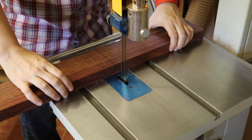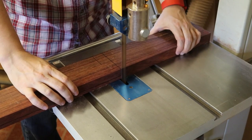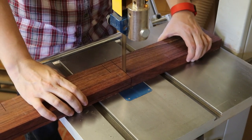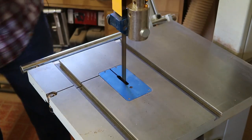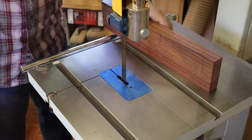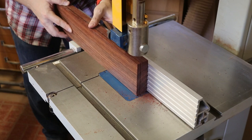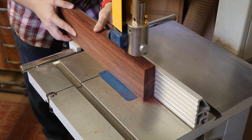Over at the band saw, I cut my piece of East Indian Rosewood to length. I had already measured out how long I needed the piece to be to get all of my butterfly keys in it. And this way, I have some extra I can always use later.